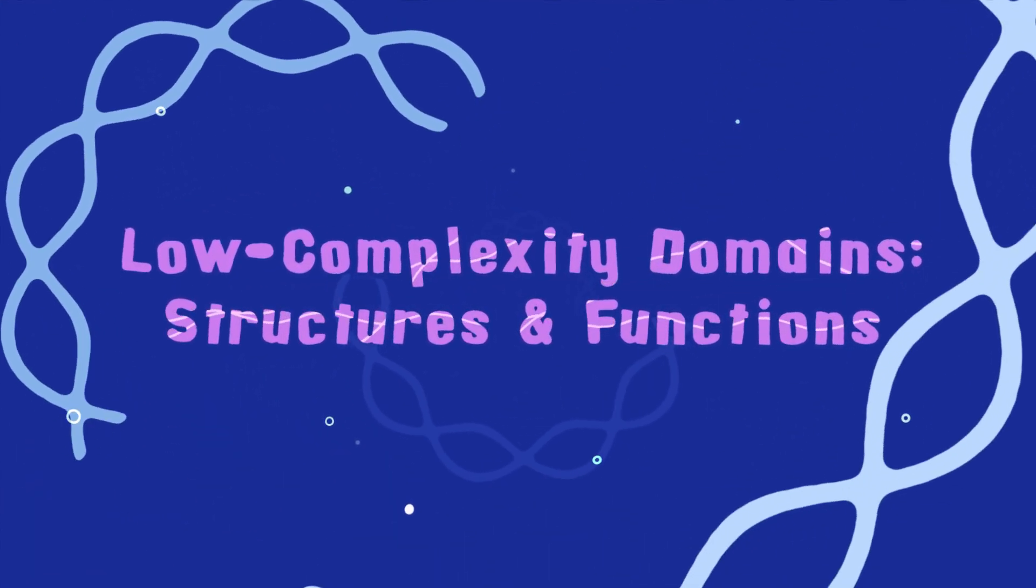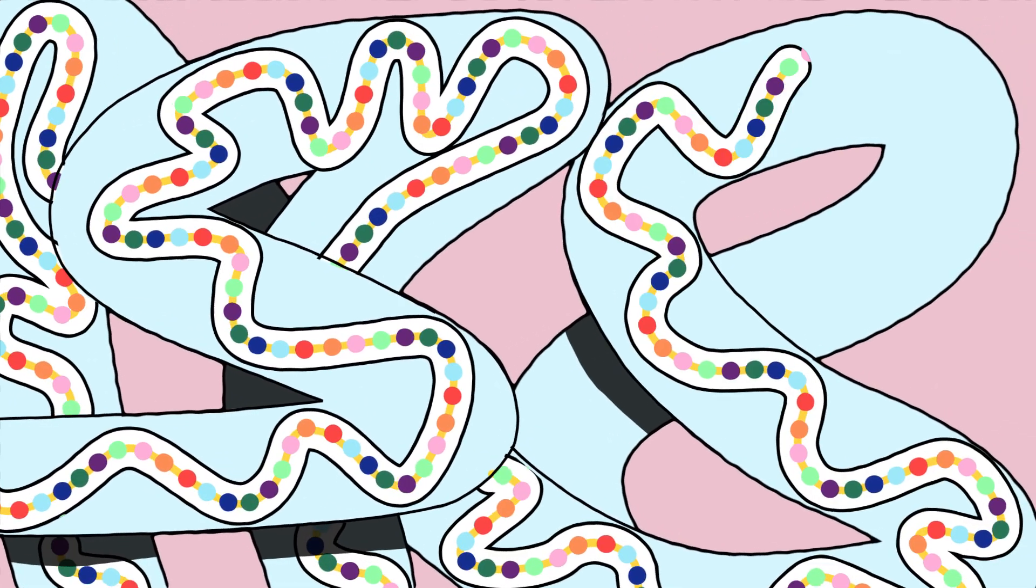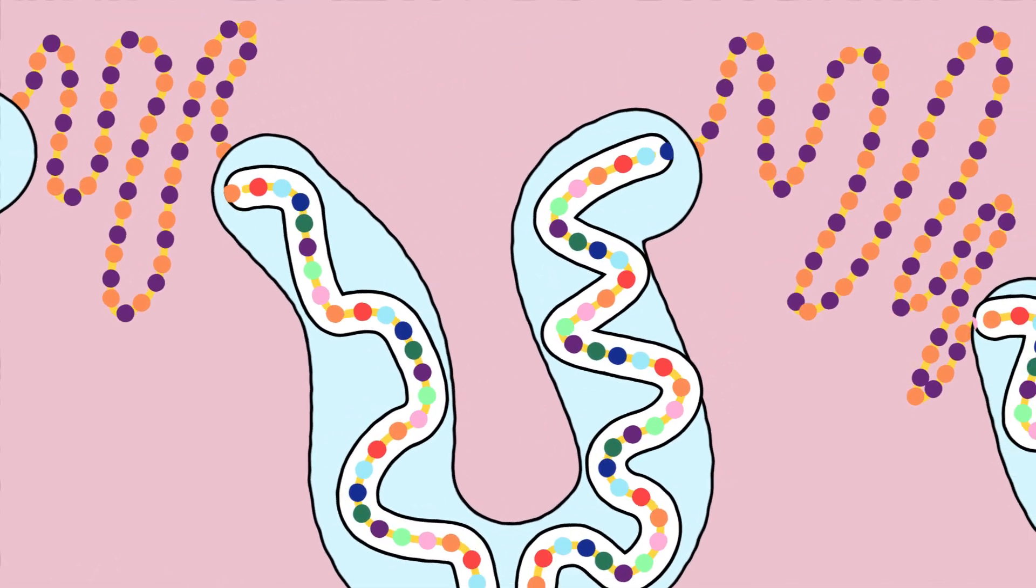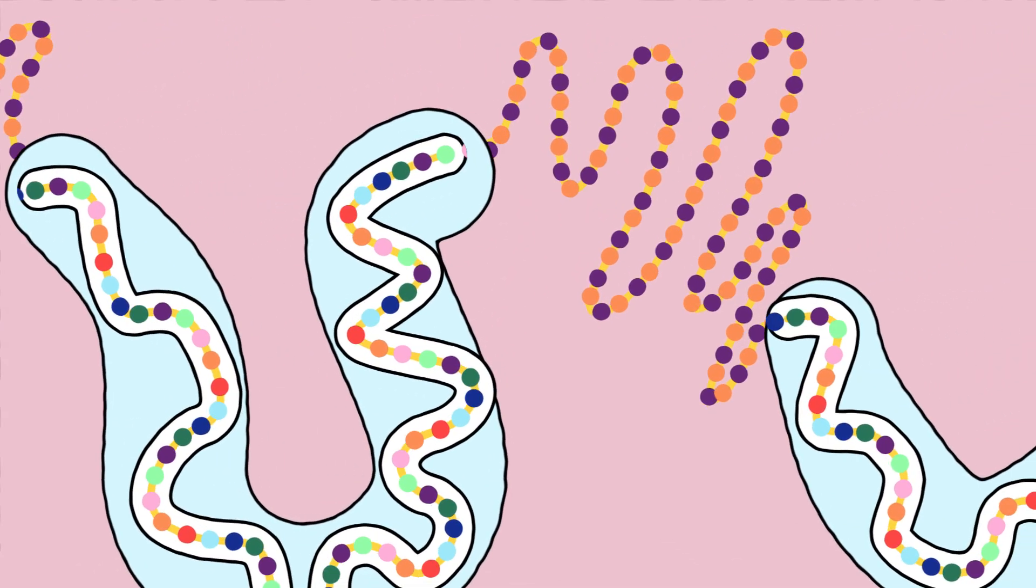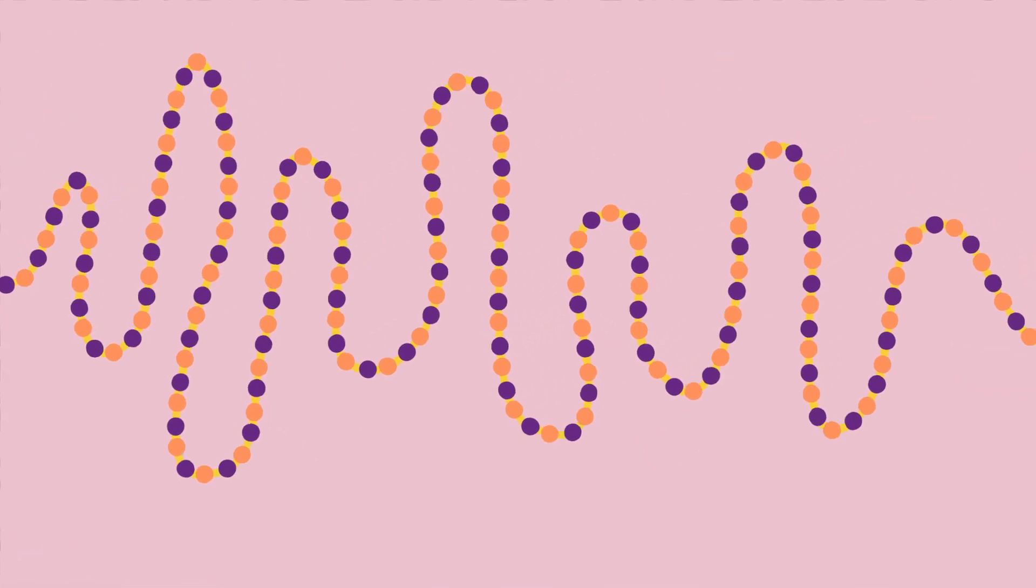For decades, the function of proteins was understood through their three-dimensional folded structures. But 15% to 20% of cellular proteins contain segments that lack stable form. These unfolded regions are built from only a few amino acids, rather than the usual 20.